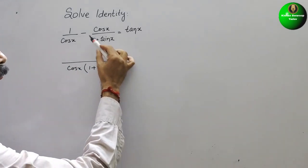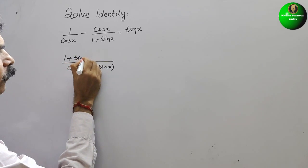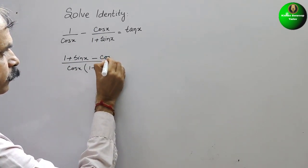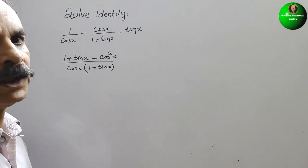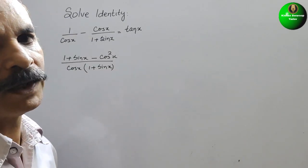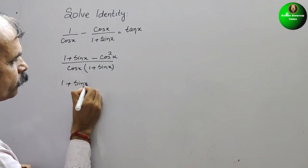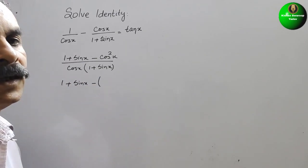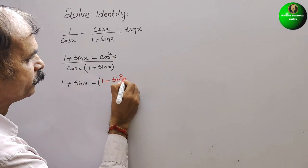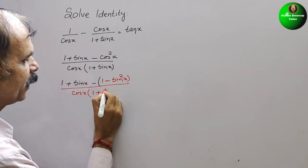Now we cross multiply. That means 1 times (1 + sin x) gives 1 + sin x, minus cos times cos which is cos²x. So the expression becomes (1 + sin x - cos²x) divided by cos x times (1 + sin x).